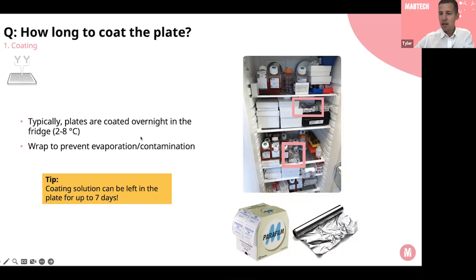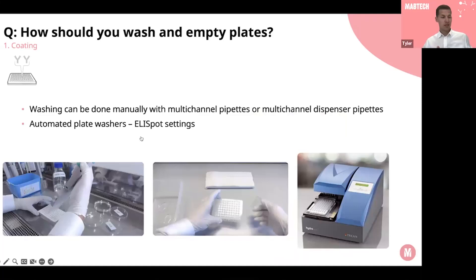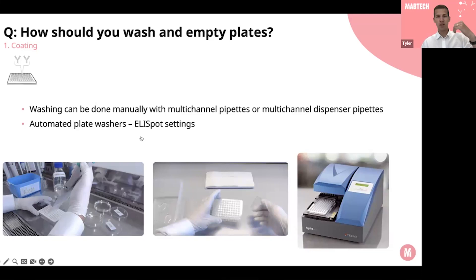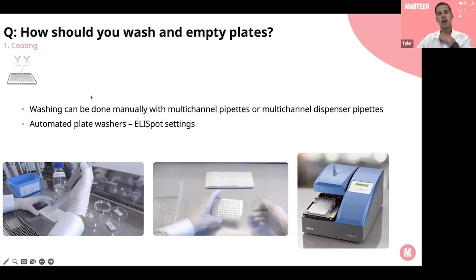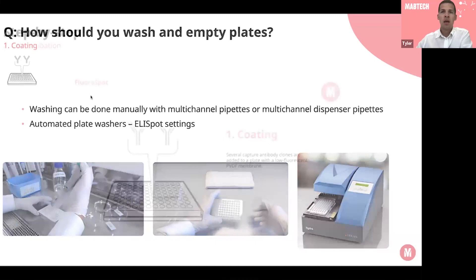Regarding washing steps: washing can be done manually or automatically with plate washers. Multi-channel pipettes or multi-channel dispenser pipettes work well for manual washing. If you have an automated plate washer, many have an ELISPOT setting ensuring the nozzle doesn't go too far down into the shallower ELISPOT wells. When emptying plates manually, use a small waste bin in the hood — I like to line it with paper towels to reduce splashing. Now you've coated and washed the plate and it's ready for cell addition.